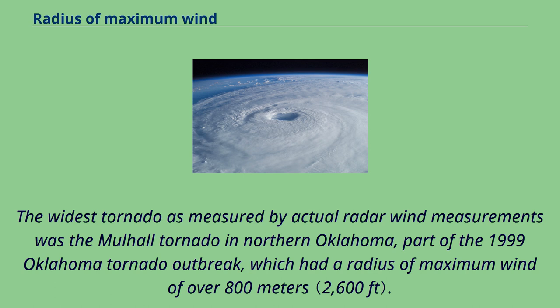The widest tornado as measured by actual radar wind measurements was the Mulhall tornado in northern Oklahoma, part of the 1999 Oklahoma tornado outbreak, which had a radius of maximum wind of over 800 meters.